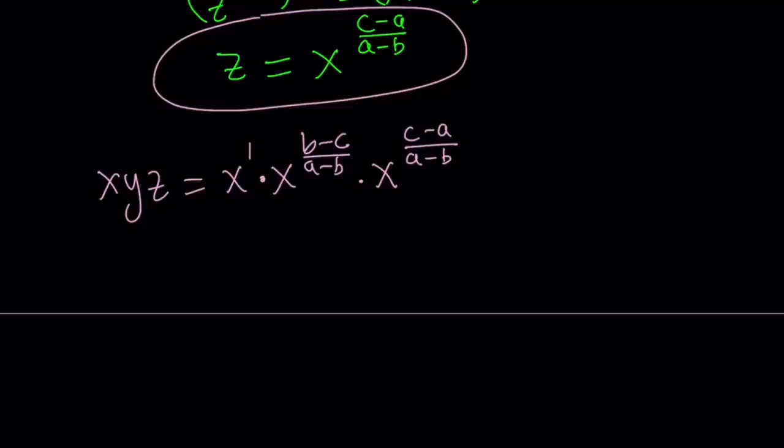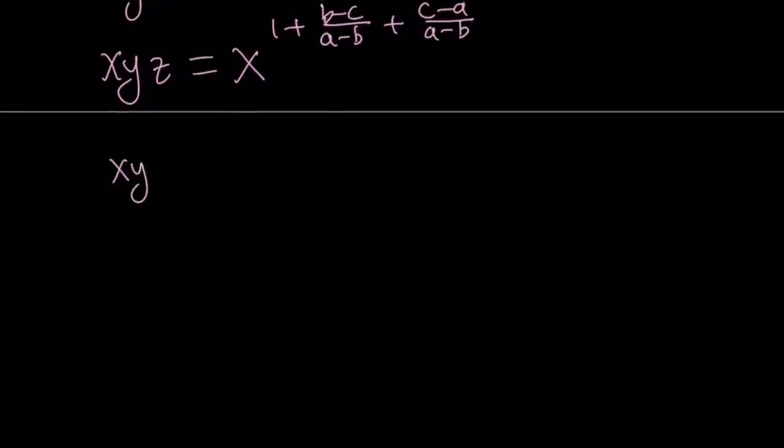Now this is just x so we can write it as x to the first power and on the right hand side of this equation we all have the same base. So when you multiply powers with the same base you add the exponents. So let's go ahead and add the exponents and write x, y, z as x to the power 1 plus b minus c over a minus b plus c minus a over a minus b. Obviously we can write the 1 as a minus b over a minus b and then you'll have three fractions with the same denominator so you can add their numerators and that's going to be like a minus b plus b minus c plus c minus a all over a minus b. And here b cancels out, c cancels out and a cancels out.